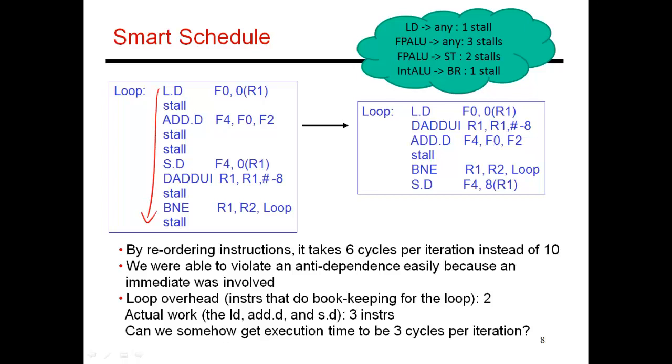So this is what my code would now look like. It starts out with this sequence, and I've changed it so that the load is done first, then I do this R1 decrement, then I do the add. I am introducing a one-cycle gap between these two. Then, because I need to introduce a two-cycle gap between the add and the store, there's nothing I can do about this stall. And the branch comes right before the store. So executing the three instructions worth of work is now taking me six cycles.